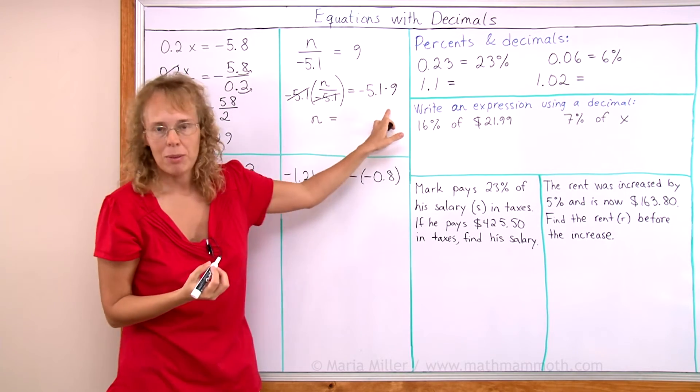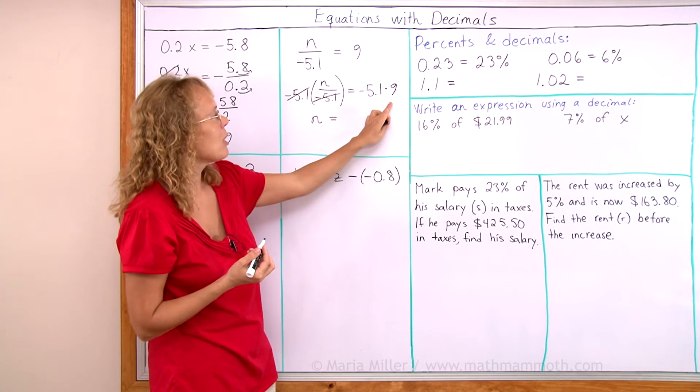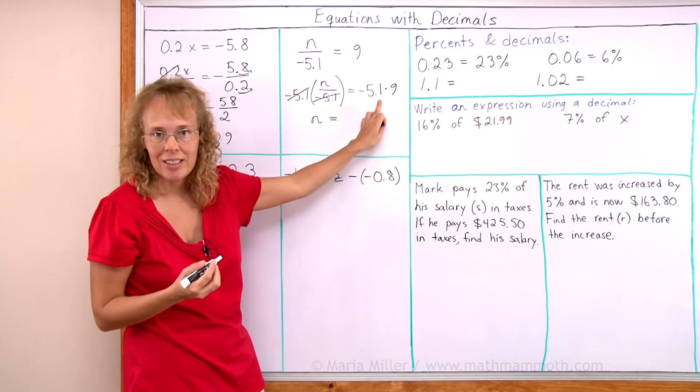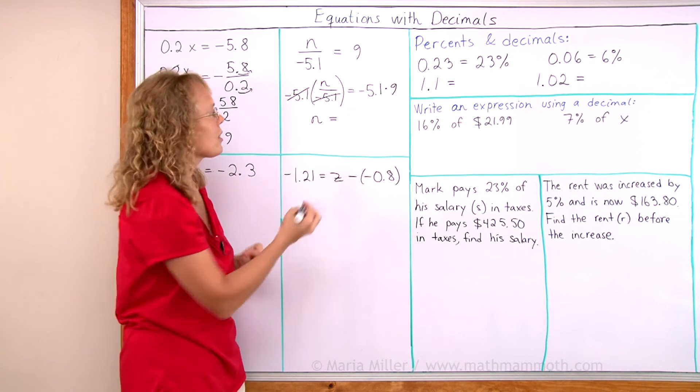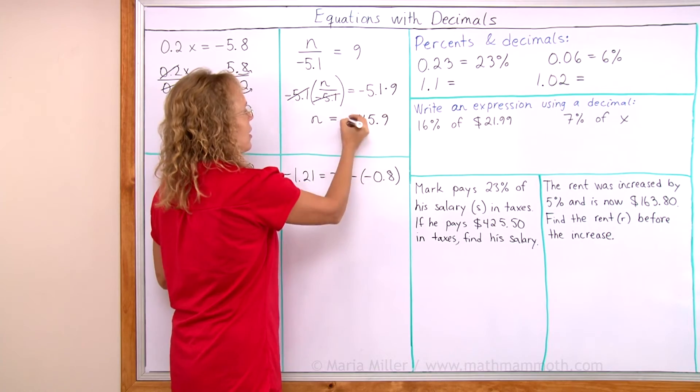And here we need to multiply this. We can do the multiplication mentally because we just multiply 9 times 5, 45, and then 9 times 1 tenth which is 9 tenths. So we get 45 and 9 tenths but it is negative.